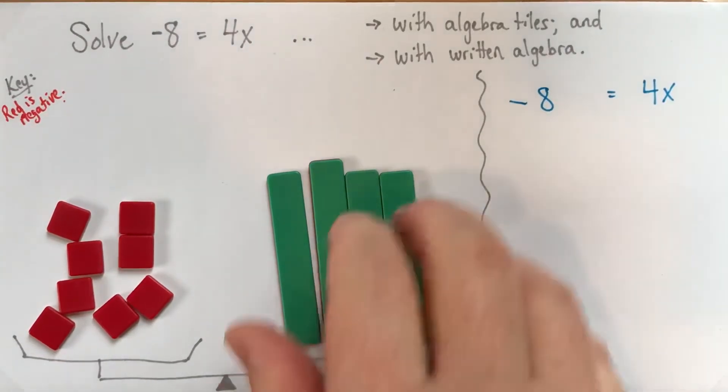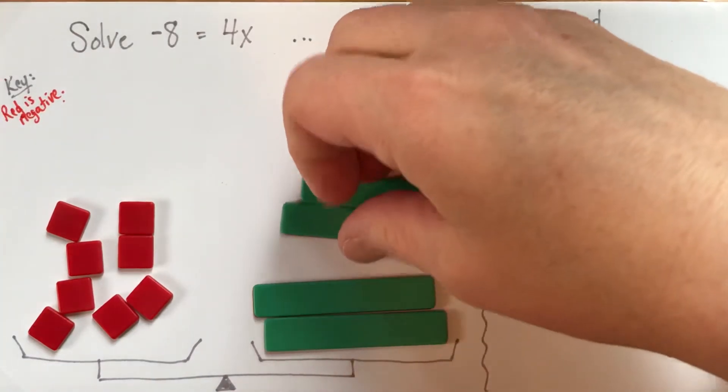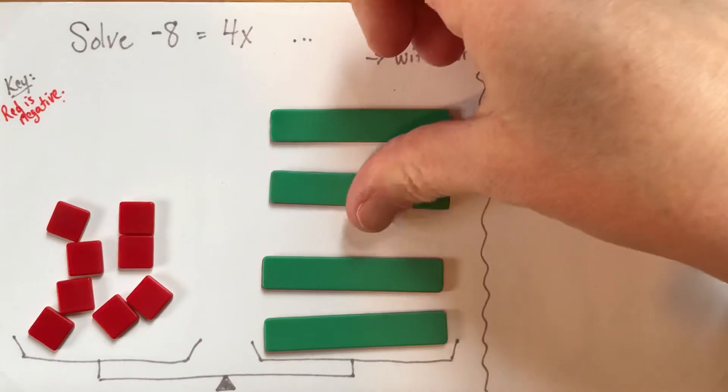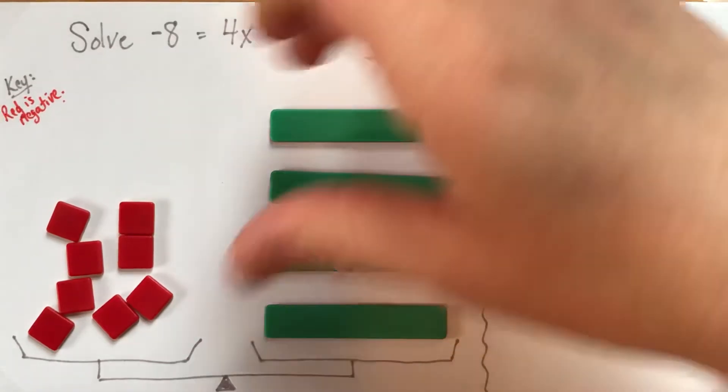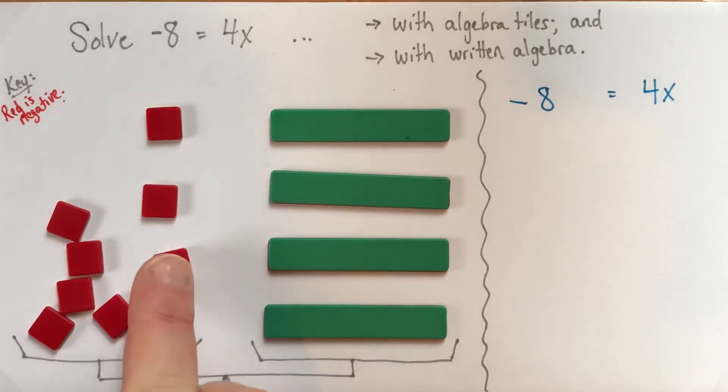And I think a nice visual way of showing this is if we take these tiles, we're going to leave the same tiles on the same sides, but we really kind of spread them out, there, into 4 different groups.